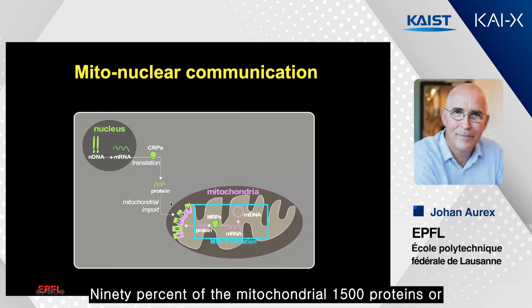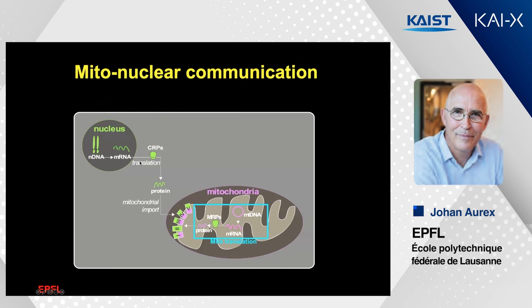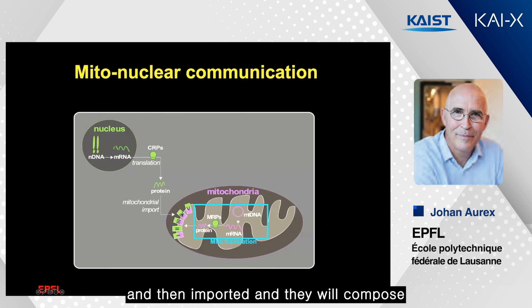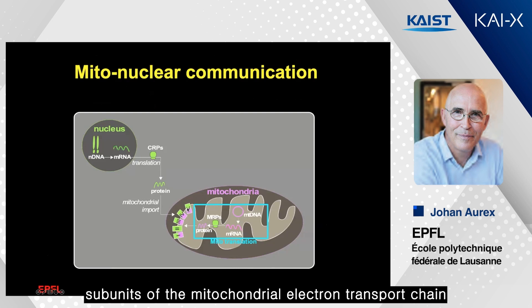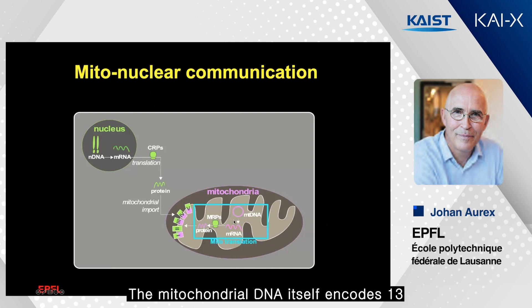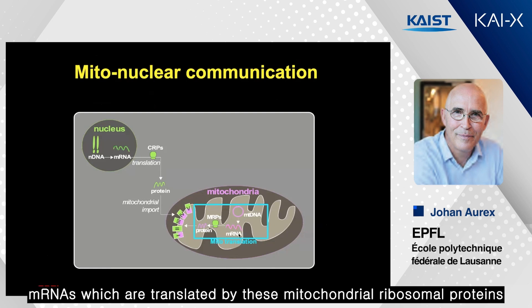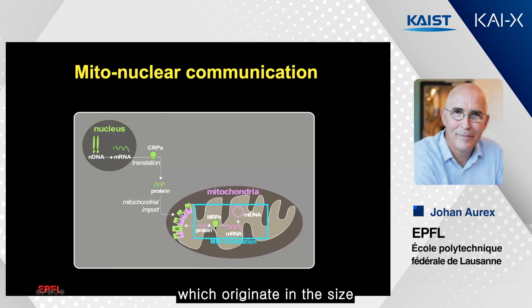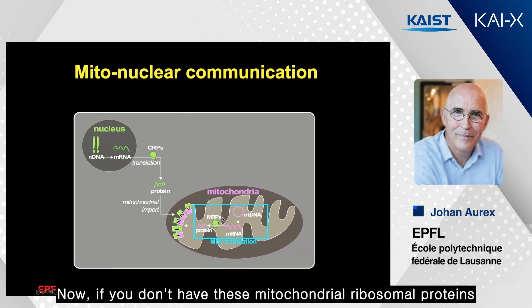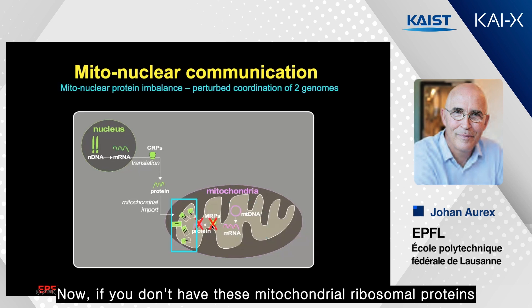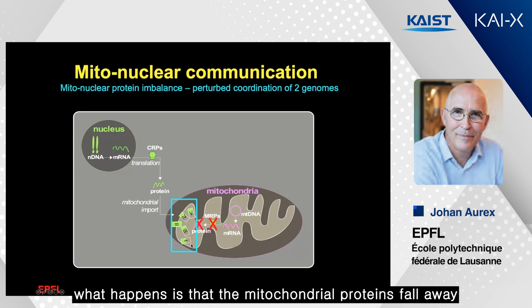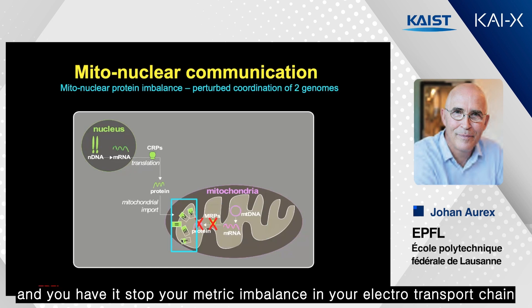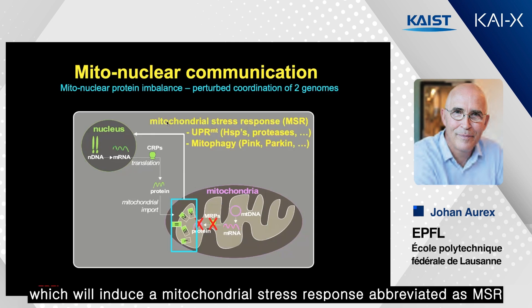About 90% of the ~1,500 mitochondrial proteins are made in the nucleus, translated in the cytosol, and then imported, composing subunits of the mitochondrial electron transport chain. The mitochondrial DNA itself encodes 13 mRNAs, translated by mitochondrial ribosomal proteins originating in the cytosol. If you don't have these mitochondrial ribosomal proteins, the mitochondrial proteins fall away, and you get a stoichiometric imbalance in your electron transport chain, which induces a mitochondrial stress response, abbreviated as MSR.